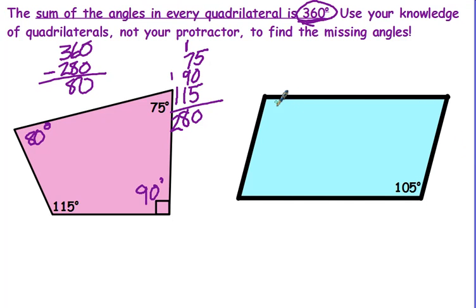Now, this one looks like it might be harder, but one neat thing about parallelograms is the opposite angles in a parallelogram are equivalent. So if this one's 105 degrees, so is this one. Now, we've got two more angles, and they will be congruent.